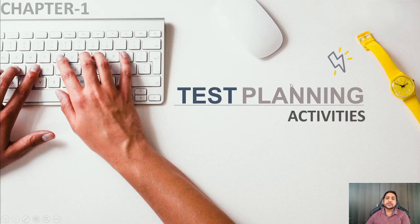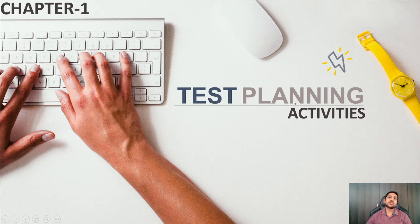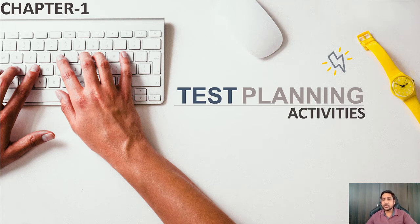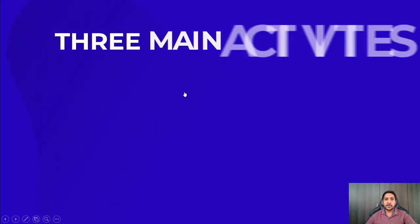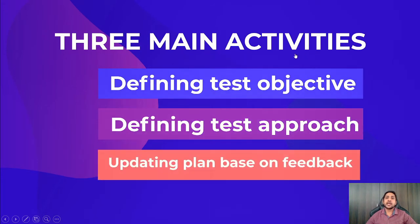Now let's look at the first test activity: test planning. Test planning is the first activity of the test process, and this topic is covered in more detail in chapter 5. Under test planning, there are three main tasks: defining the test objective, defining the test approach, and updating the test plan based on feedback.